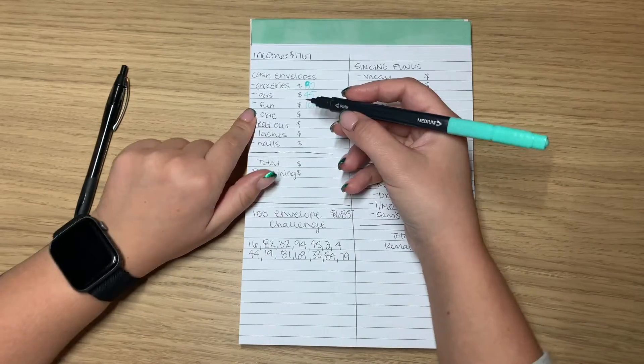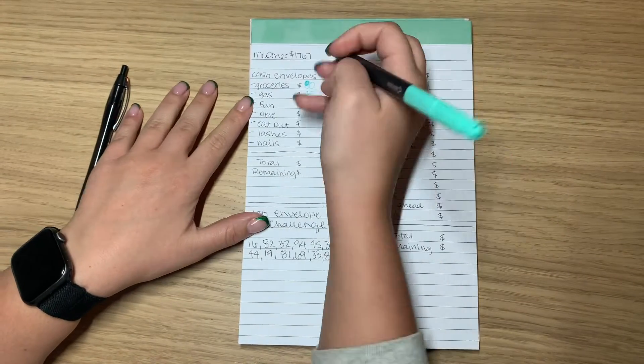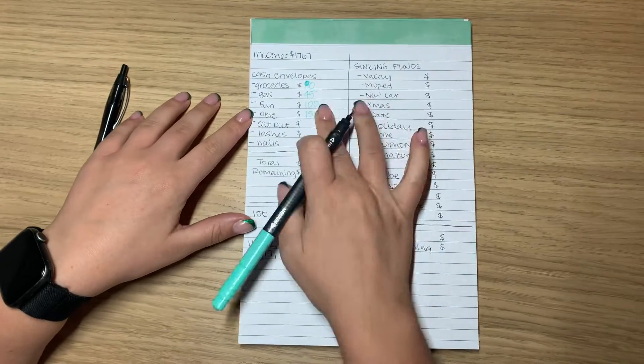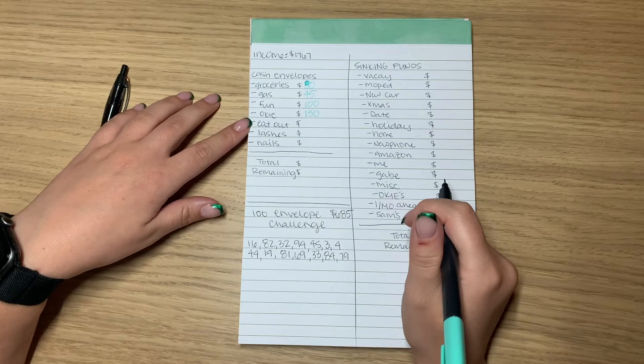Fun is getting $100. So Oki has a vet appointment and a grooming, so he needs $150, which he might need more, but I'm putting some in his emergency fund, so it'll be okay.